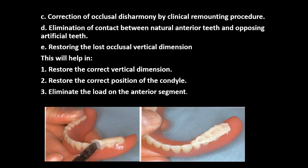You should also correct any occlusal disharmony by means of a clinical remounting procedure. If the condition is a maxillary denture against natural teeth, you may relieve the contact between the natural and artificial teeth, especially if vertical dimension is lost. You may increase the vertical dimension by using an acrylic stop adapted to the posterior teeth and ask the patient to close into centric occlusion at this new vertical dimension, thereby restoring correct contact position and eliminating load on the anterior segment of the denture.